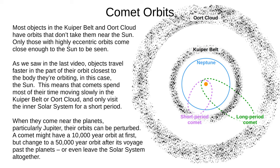As we saw in part one, objects travel fastest at periapsis, where they're closest to the body they're orbiting — the Sun for comets. Comets spend most of their time moving very slowly in the Kuiper belt or Oort cloud, only visiting the inner solar system for a short time. When they come near the planets, especially Jupiter, their orbits can be perturbed — for instance, a comet might come in with a 10,000-year orbit and return with a 50,000-year orbit, or even leave the solar system altogether.